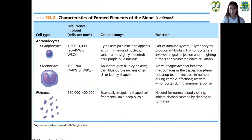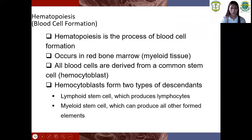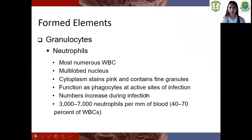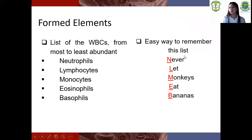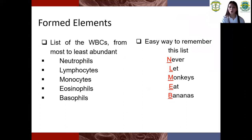The last topic is platelets. The function of platelets: needed for normal blood clotting, initiate clotting cascade by clinging to the torn area. So to remember the order from most to least abundant: Never Let Monkeys Eat Bananas — N for neutrophils, L for lymphocytes, M for monocytes, E for eosinophils, B for basophils. Thank you for listening.